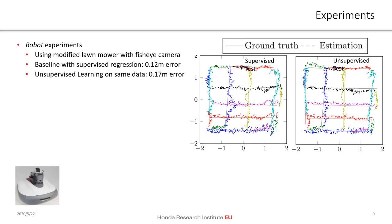Next, we show results with an actual robot and an omnidirectional fisheye camera tilted upwards. Using the same approach as in the previous slide, we also get very good results for the supervised baseline and the unsupervised approach. The supervised approach has an average error of 12 centimeters and the unsupervised approach an average error of 17 centimeters.